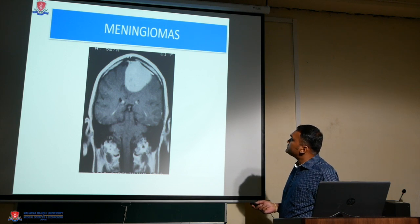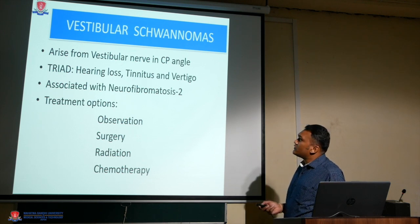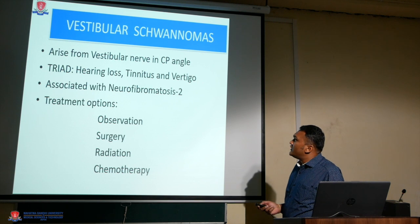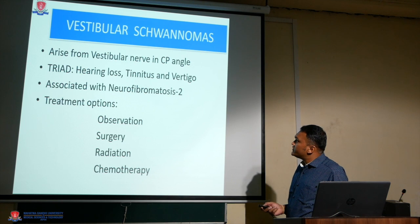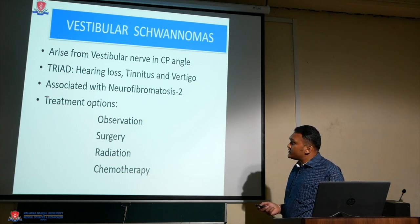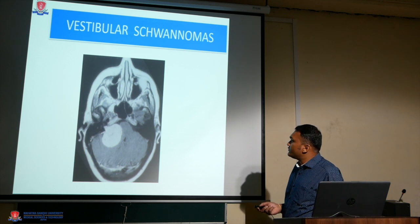The next tumor is vestibular schwannoma, a commonly seen tumor arising from the vestibular nerve in the cerebellopontine angle. The triad of vestibular schwannoma is hearing loss, tinnitus, and vertigo, and it is associated with neurofibromatosis type 2. Treatment options are observation, surgery, radiation therapy, and chemotherapy. This is an example of a right-sided vestibular schwannoma.